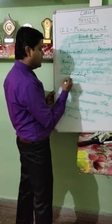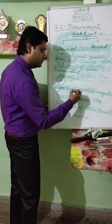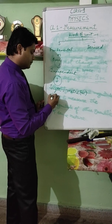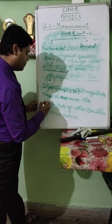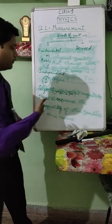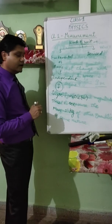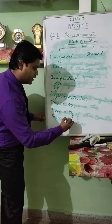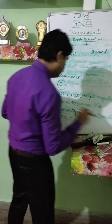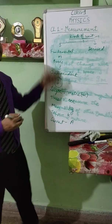Fundamental units are seven in number. Length — standard unit is metre, symbol small m. Time — standard unit is second. Mass — standard unit is kilogram. We do not require any formula for these, so they fall in the category of fundamental units. More fundamental units are temperature — standard unit Kelvin — luminous intensity, and electric current — standard unit ampere, represented by capital A. All these come in the category of fundamental units.